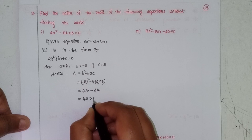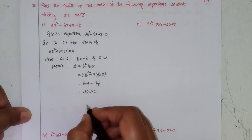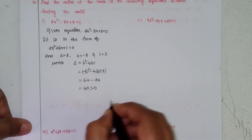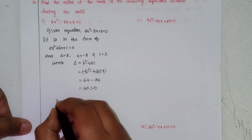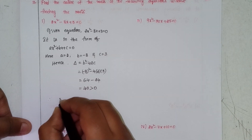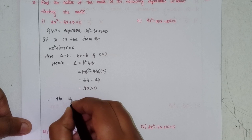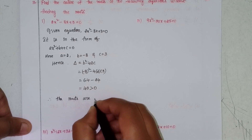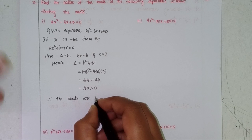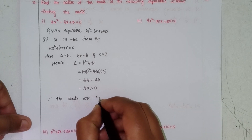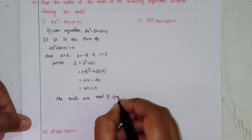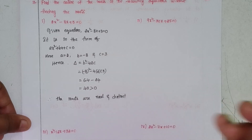Delta = 40, which is greater than 0. Therefore, the roots are real and distinct.